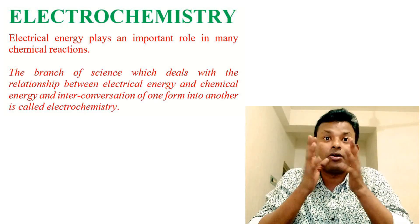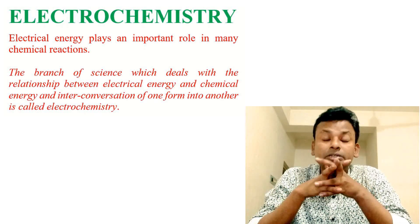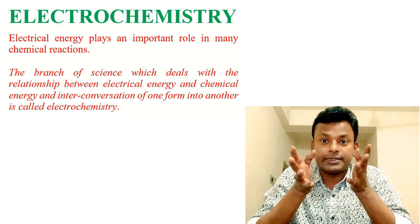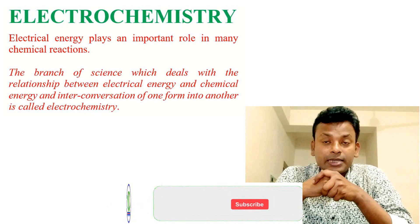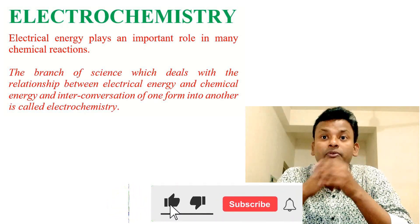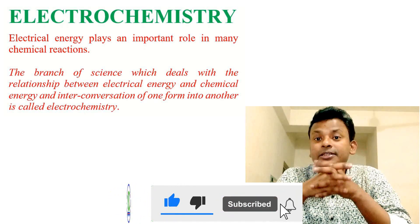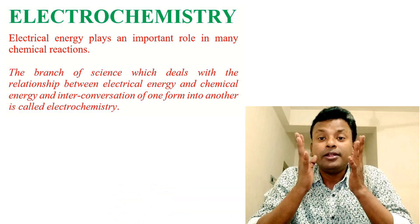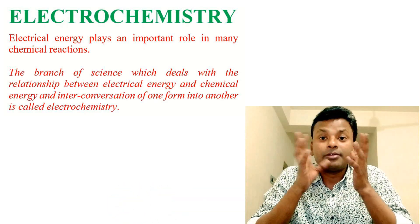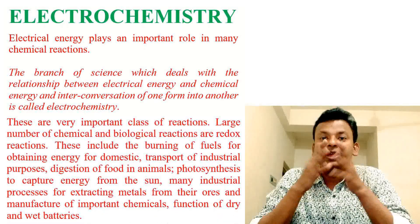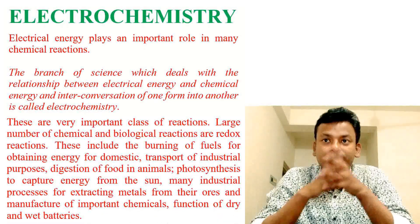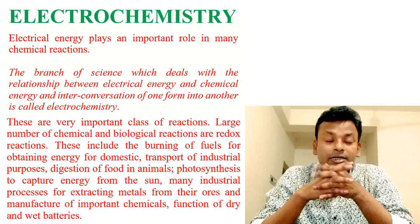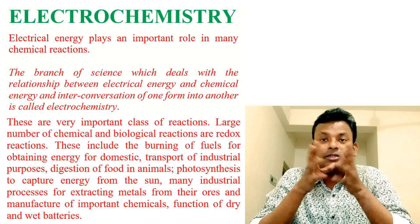Electrochemistry may include chemical reactions that occur due to the passage of electrical energy, as well as the generation of electrical energy due to chemical energy. The basis of this type of process are redox reactions, which we discussed in the previous chapter.